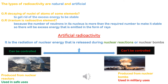There is another type of radioactivity known as artificial radioactivity, which is the radiation or nuclear energy released during nuclear reactions. This can either be controlled, as in nuclear reactors used for safe purposes, or uncontrolled, as in a nuclear bomb.